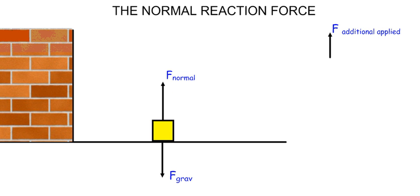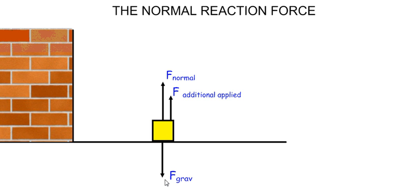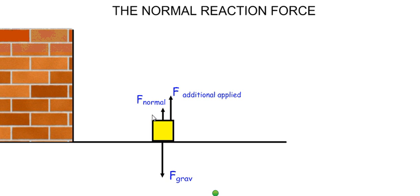When the additional applied force is removed, the normal force returns and equals the gravitational force. Likewise, if the additional applied force is now applied in the opposite direction — upwards — then the total force that the crate is pushing the ground with is the gravitational force that acts to push it downwards, minus the applied force that acts to push it upwards. That means the size of the normal force will have to reduce, to such a level that the normal force plus the additional applied force must equal the gravitational force.